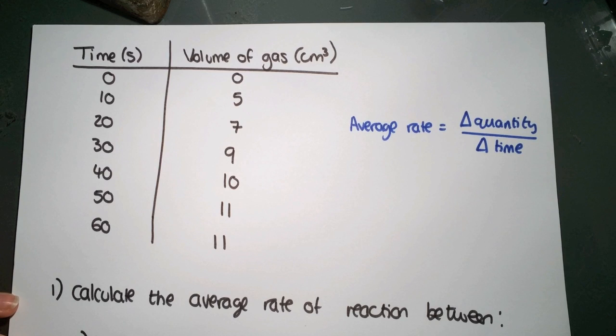There are two ways you could be asked to calculate average rate. One is from a table and the other is from a graph. So we're going to start by looking at the table.